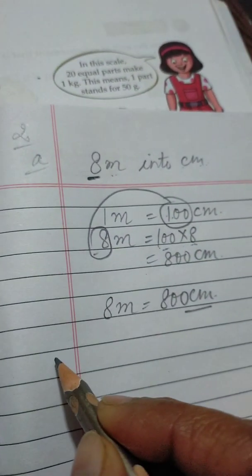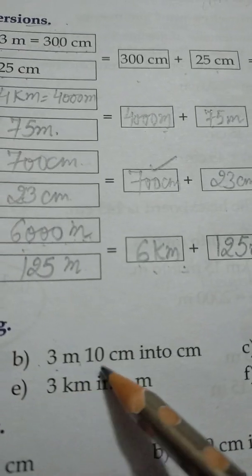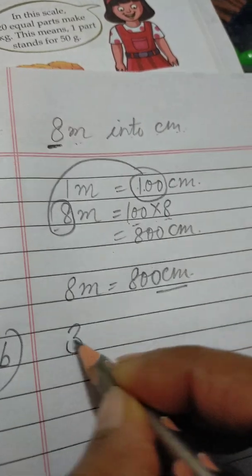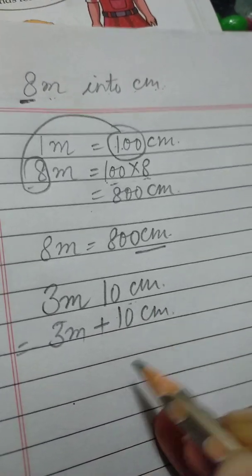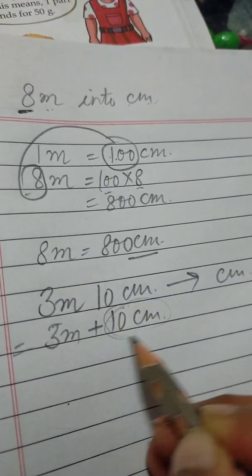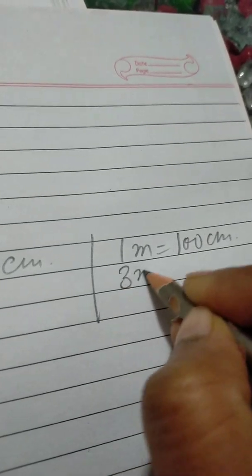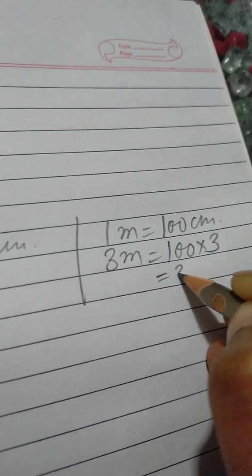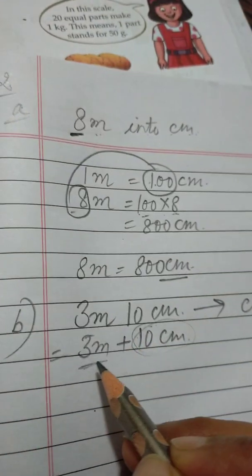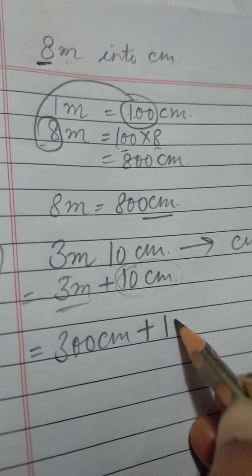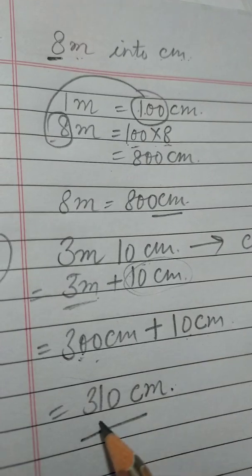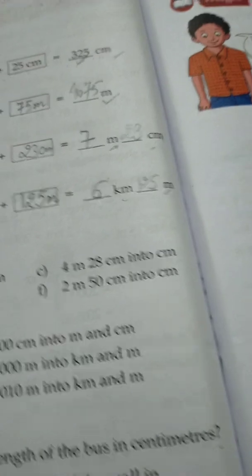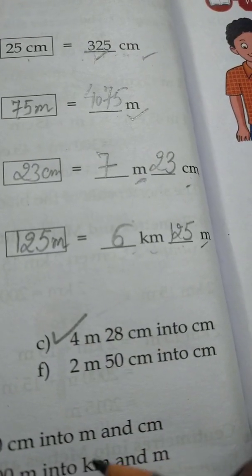Part b: 3 meter 10 centimeter. We have the two parts, written using a plus symbol. We have to convert this into centimeters. 10 centimeter is already in centimeters, so we only convert 3 meters: 1 meter equals 100 centimeters, so 3 meter equals 100 multiplied by 3, which is 300 centimeters. Then 300 centimeters plus 10 centimeters gives 310 centimeters. You can do part c by yourself.